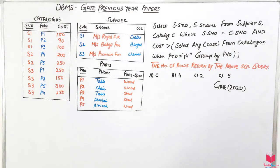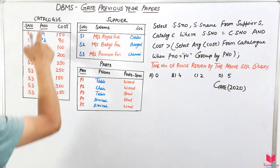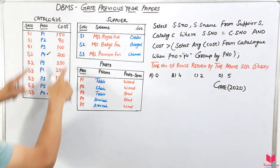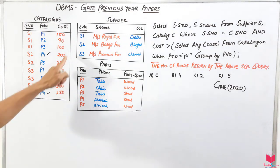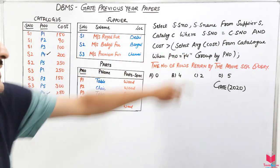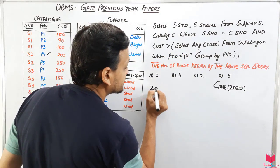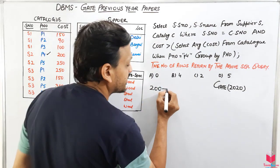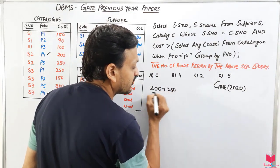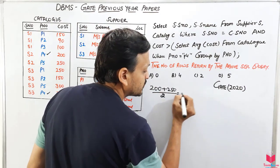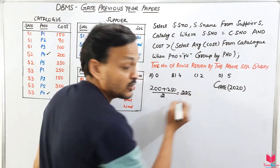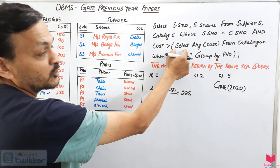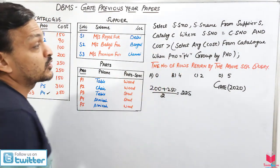In the inner query, we select rows where p_number equals p4. This returns two rows with cost values 200 and 250. Taking their average: (200 + 250) / 2 = 225. So the average cost of 225 is passed as the result of the sub-query to the outer query.